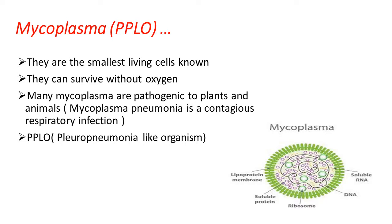In animals like humans and cattle, mycoplasma causes respiratory-related disorders. That disease is named mycoplasma pneumonia, and it is a contagious disease. It will easily spread from an infected person to a healthy person through sneezing or coughing, which spreads the pathogen from one organism to another.